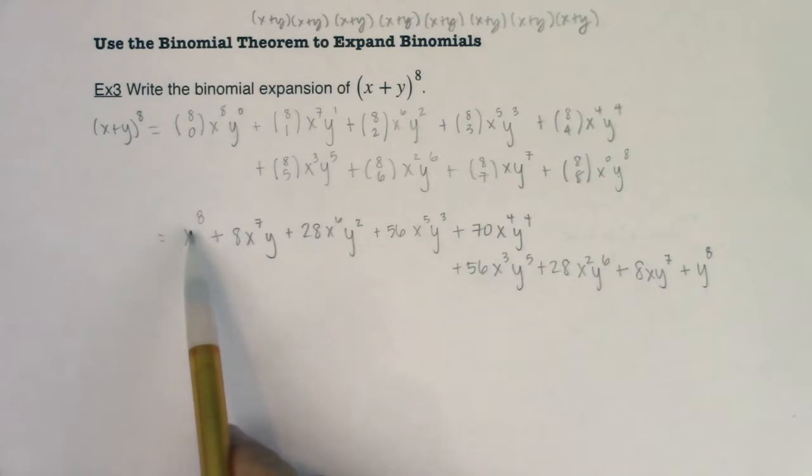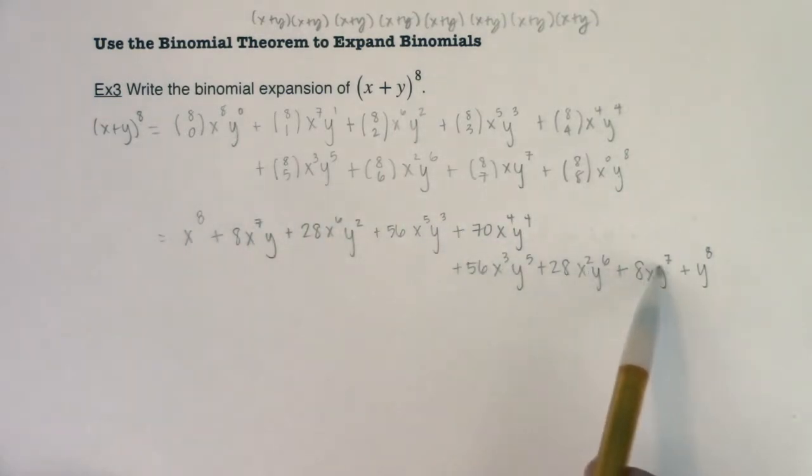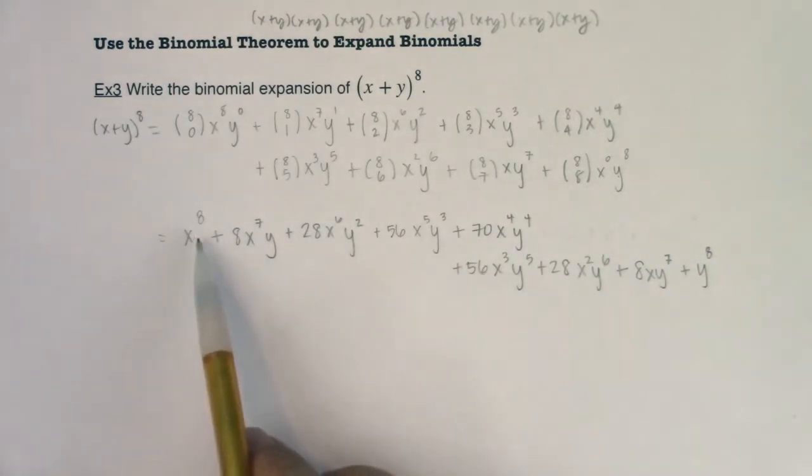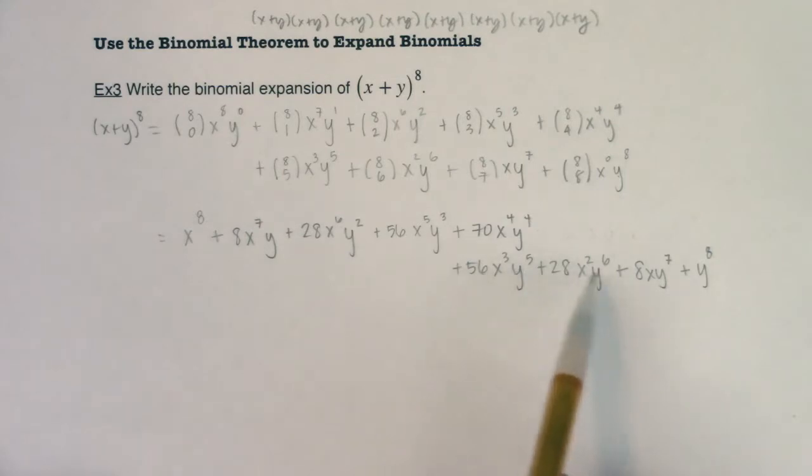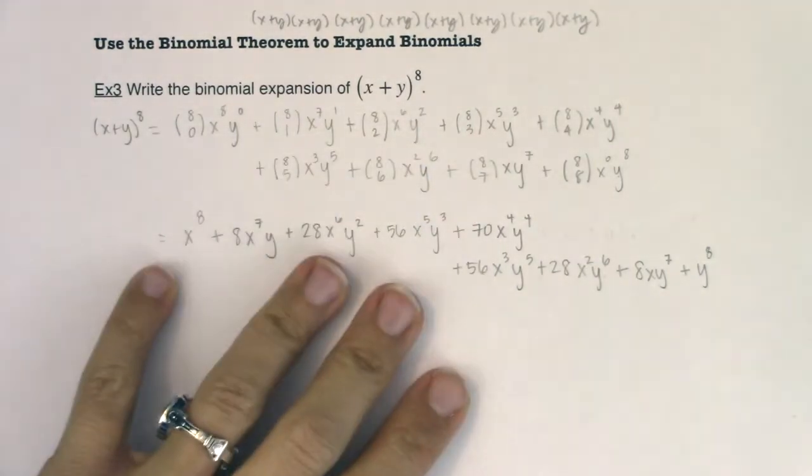And again, powers of x descended. We had 8, 7, 6, 5, 4, 3, 2, 1, 0. And for y's they ascended. We had 0, 1, 2, 3, 4, 5, 6, 7, 8. So as you become more and more comfortable expanding binomials with the binomial theorem, these problems tend not to take so long.